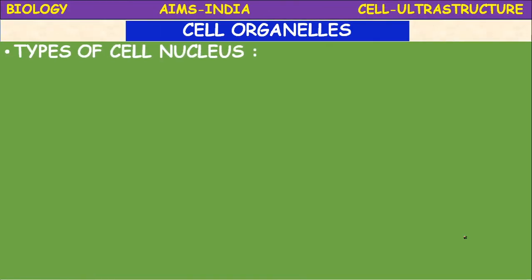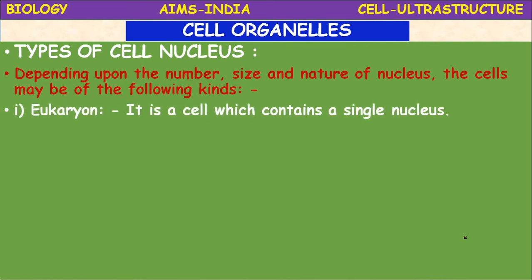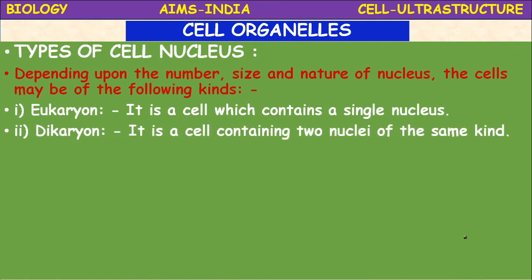The nucleus controls almost all vital functions of the cell; hence it is called the control center of the cell, or often it is called the 'cell brain.' Depending upon the number, size, and nature of nucleus, cells may be classified into following kinds. Eukaryon: a cell which contains a single nucleus — 'eu' means true, 'karyon' means nucleus.